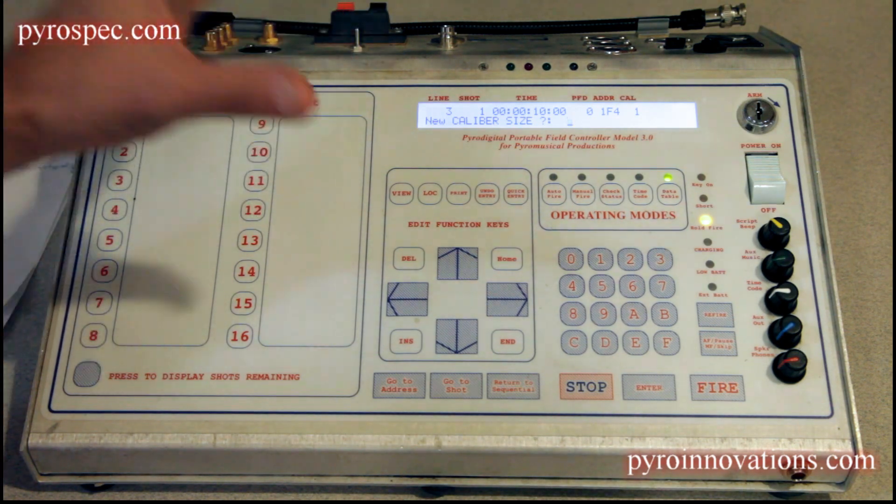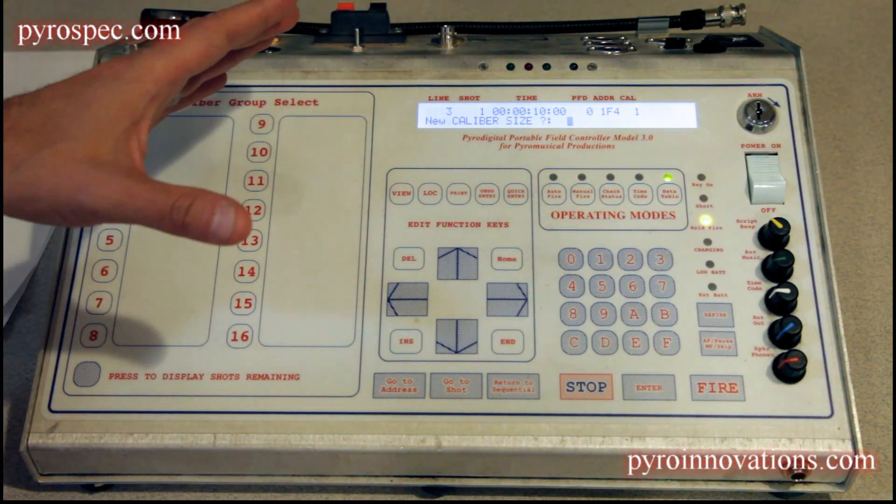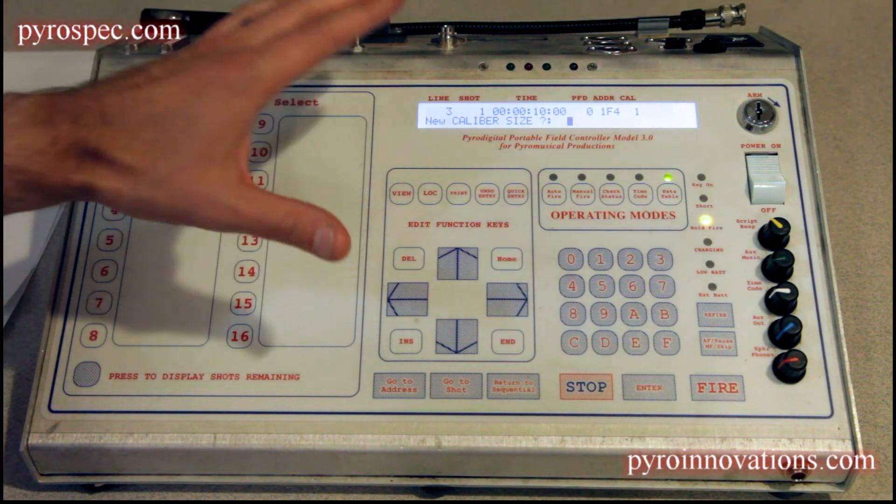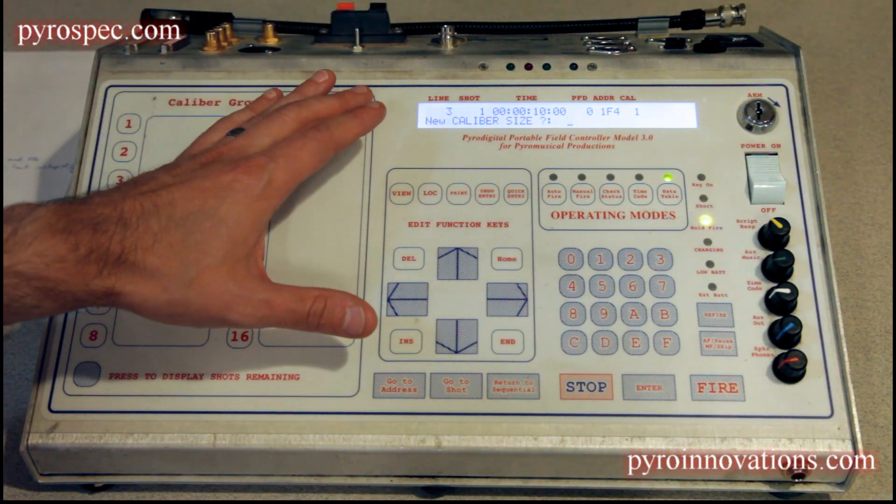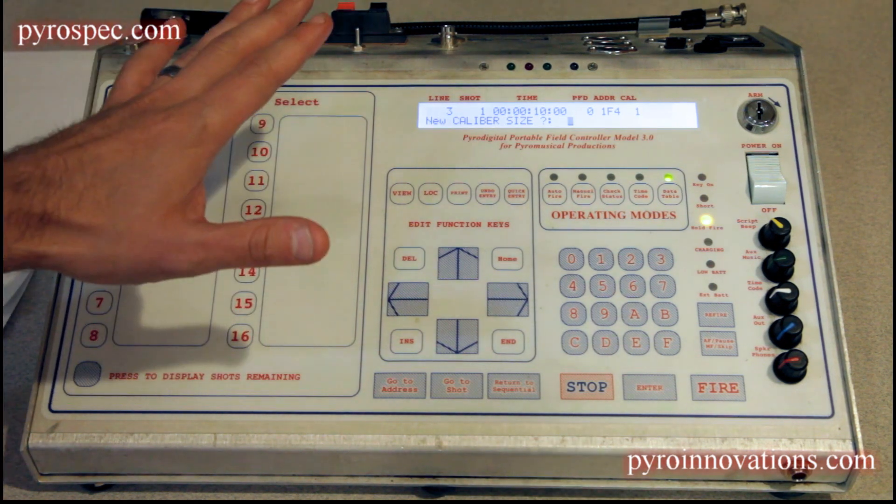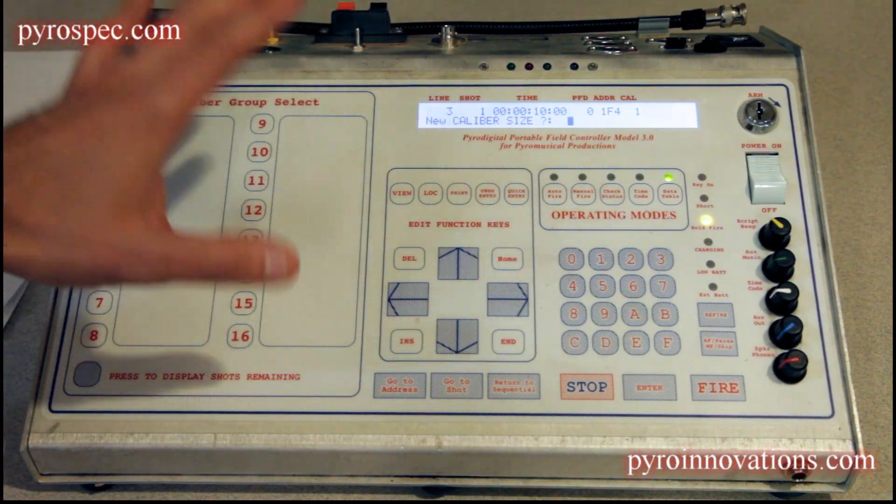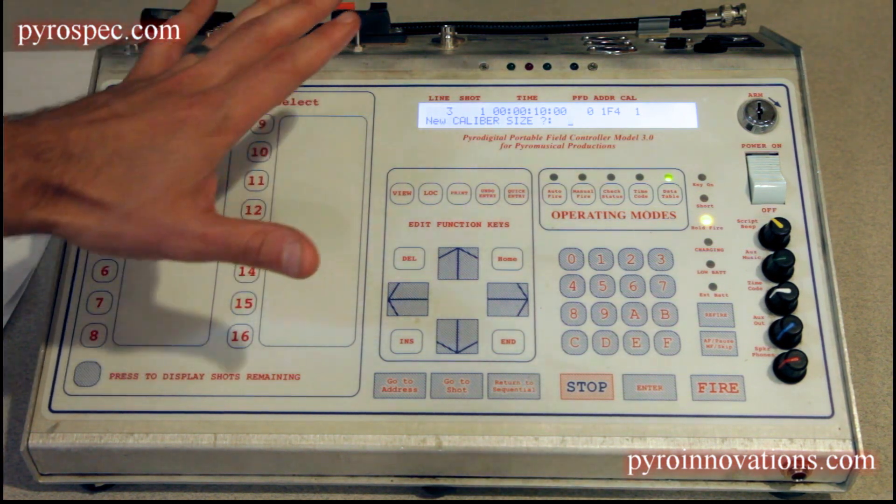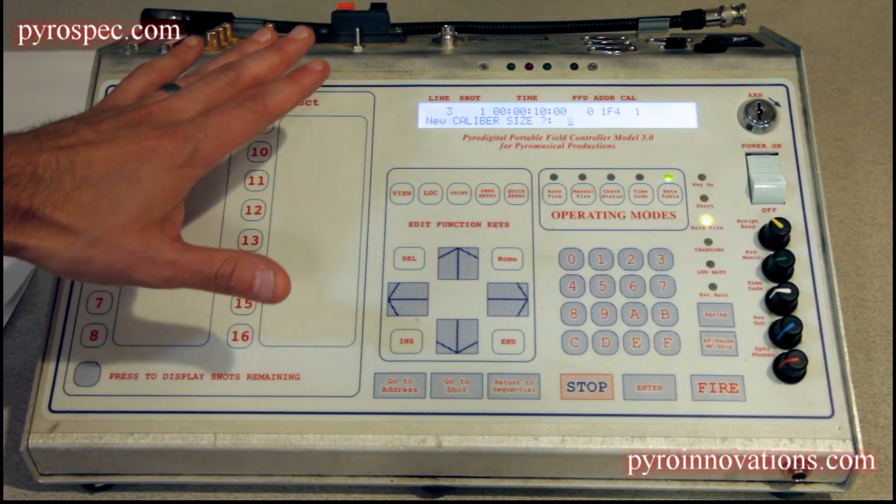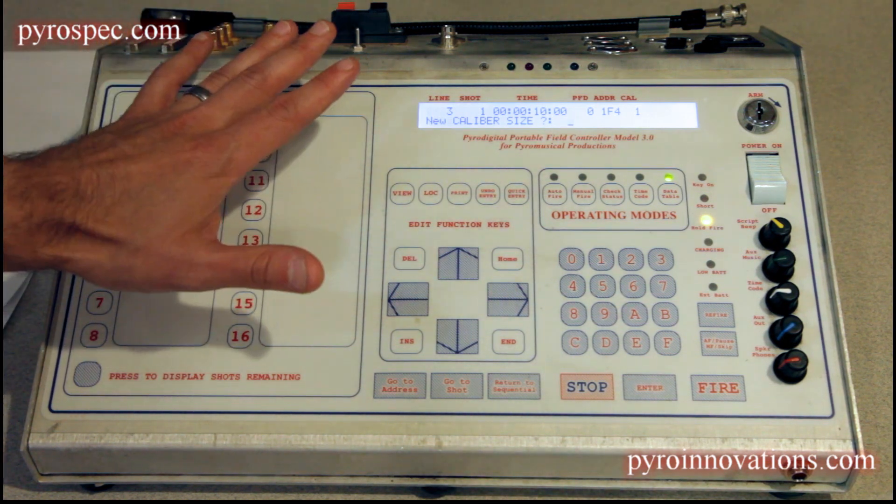This is due to a memory buffer limitation within the field controller. When the field controller fires a shot, it applies a 30 millisecond firing pulse to that particular cue at that particular address. For that reason, you can't have more than one cue in a given field module during a zipper fire event.